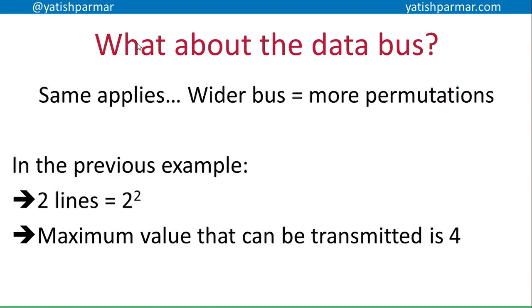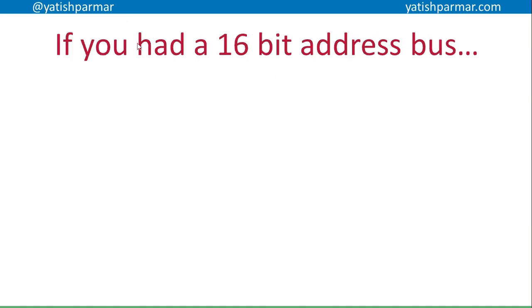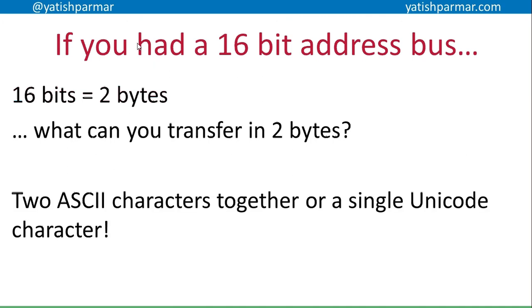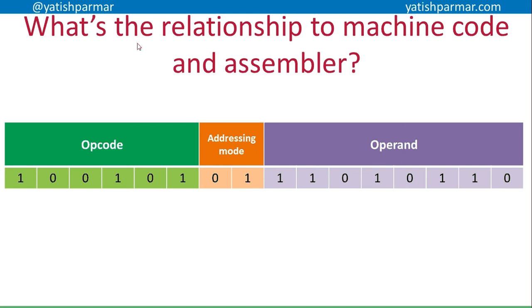What about the data bus? Basically the same thing applies: a wider bus equals more permutations. In the previous example with two lines, 2 to the 2 is 4 — values zero, one, two, three — that's all I can transmit. That's a bit limiting because it means I can't transmit large values. With a 16-bit data bus, I'd be able to transfer two bytes at once — that's two ASCII characters or a single Unicode character.